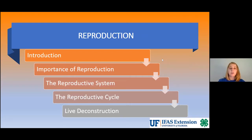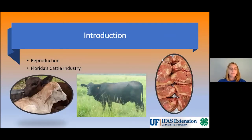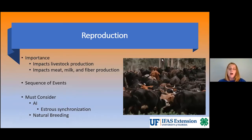Florida's cattle industry is primarily cow-calf. At the end of the day, our primary goal as cow-calf producers is to provide a wholesome and nutritious product for you and your family. Cow-calf producers hope to wean a calf every year from every cow and heifer exposed to a breeding program. Reproduction therefore impacts livestock production, and through that it can impact the meat, milk, and fiber production of the beef industry.